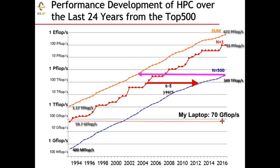We have this incredible change fueled by events in the electronics industry — Moore's Law being at the seat of that. The phone I use, my iPhone — there's an app for that. You can download the LINPACK benchmark app. When I run it on my phone, I get four gigaflops. That would have been considered one of the 500 fastest computers back in 1996. Incredible changes taking place over a very short period of time.